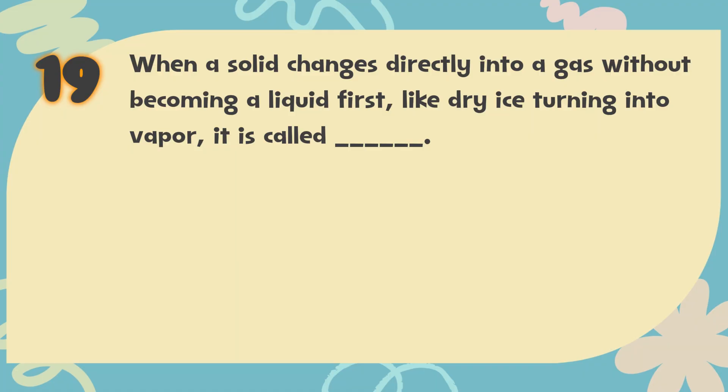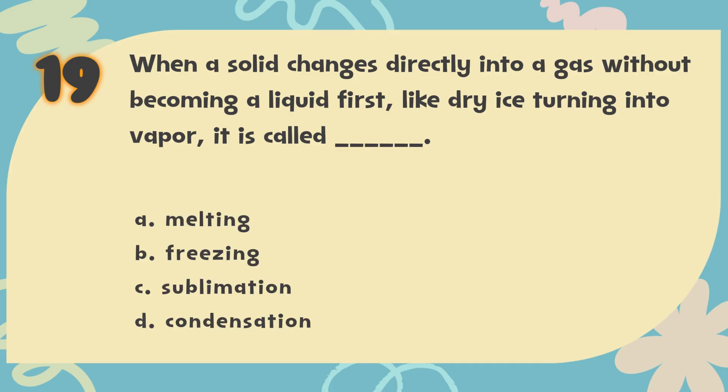Number 19: When a solid changes directly into a gas without becoming a liquid first, like dry ice turning into vapor, it is called blank. The choices are: A. Melting, B. Freezing, C. Sublimation, D. Condensation.